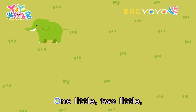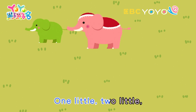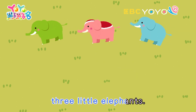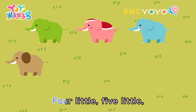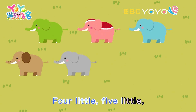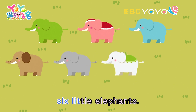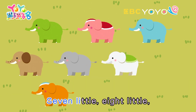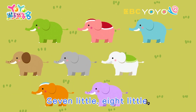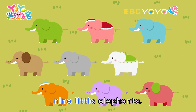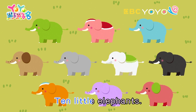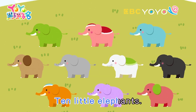One little, two little, three little elephants. Four little, five little, six little elephants. Seven little, eight little, nine little elephants. Ten little elephants.